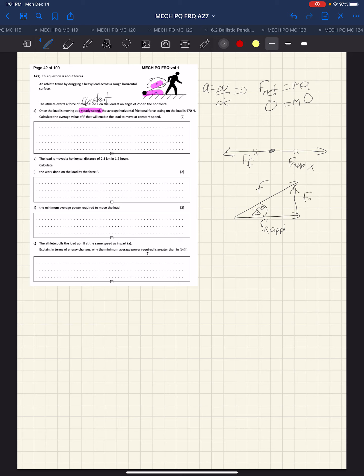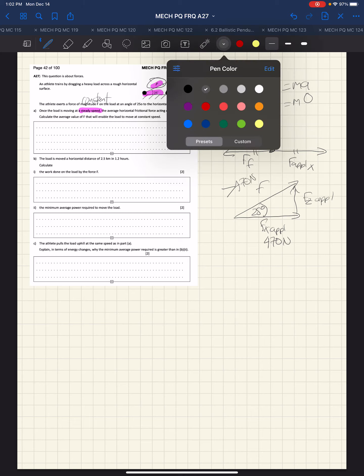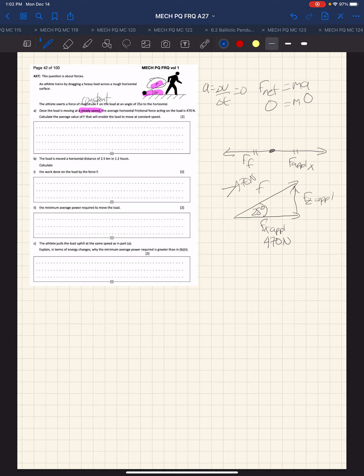Let's do our trigonometry. Here's our theta, here's the opposite side, here's the adjacent side, and here's the hypotenuse. This is a cosine problem: cosine of 25 equals the adjacent side, which is F_x applied, over the hypotenuse F. Solving for F, F equals F_x applied over cosine 25, which is 470 over cosine 25.